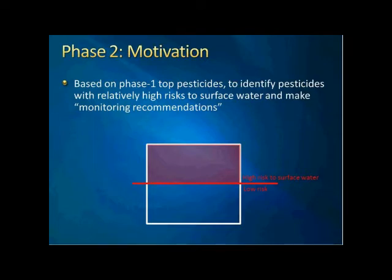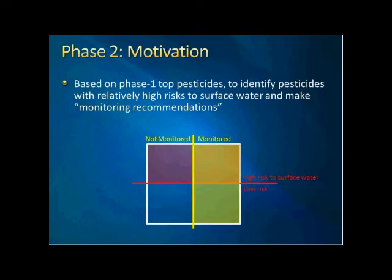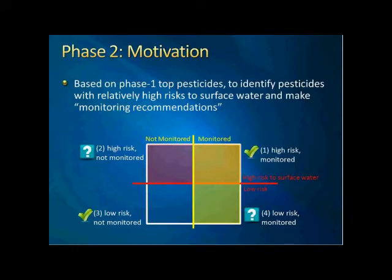For monitoring purposes, we try to capture high-risk pesticides as much as possible and avoid low-risk pesticides to use our resources more efficiently. By comparing to our current monitoring data, we found some differences. There are some high-risk pesticides not currently monitored, and some low-risk pesticides that are monitored. So there are four sections. For sections one and three — high-risk pesticides monitored and low-risk pesticides not monitored — those are what we really want. But for regions two and four, there are problems. The specific objective of phase two is to minimize regions two and four, and maximize regions one and three.